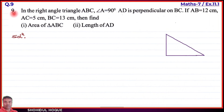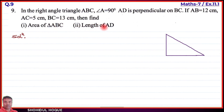In right angle triangle ABC, angle A equals 90 degrees. AD is perpendicular on BC. If AB equals 12 centimeters, AC equals 5 centimeters, BC equals 13 centimeters, then find: part number one, area of triangle ABC; part number two, length of AD.